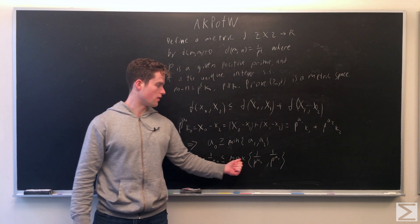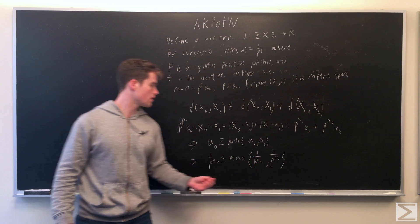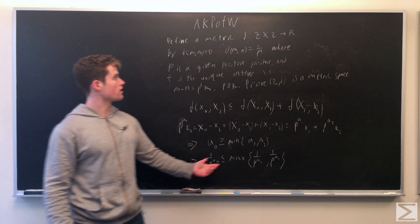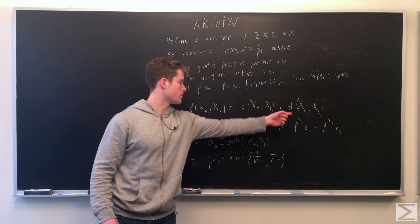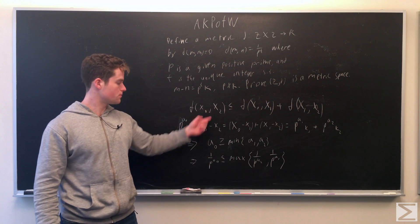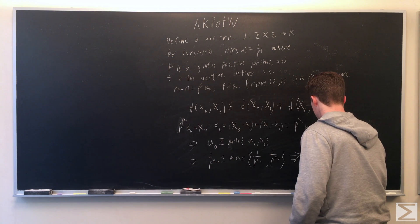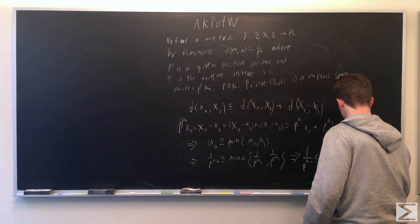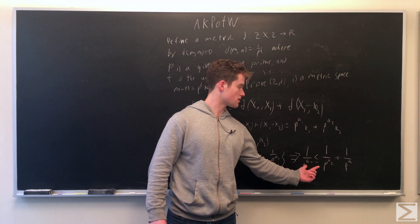But this implies 1 over p to the a0 is less than or equal to the maximum of 1 over p to the a2 and 1 over p to the a1. But since our distance is given by just 1 over p to the a2, 1 over p to the a1, 1 over p to the a0, we can conclude.